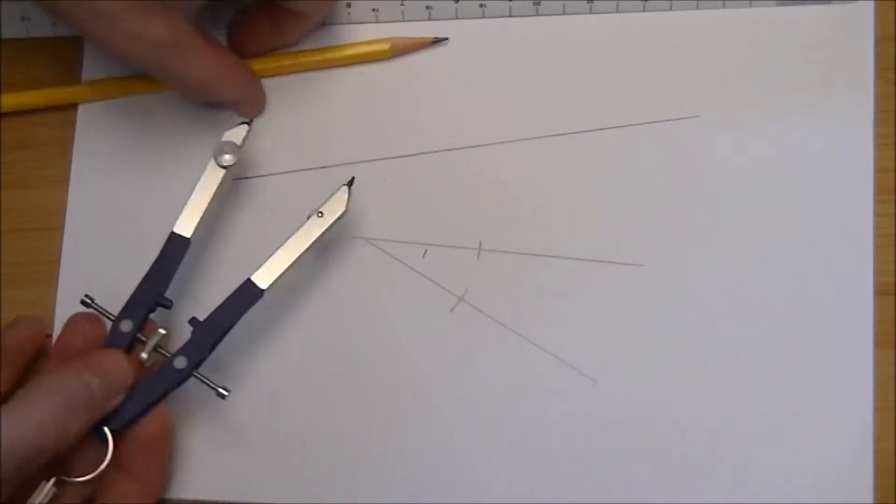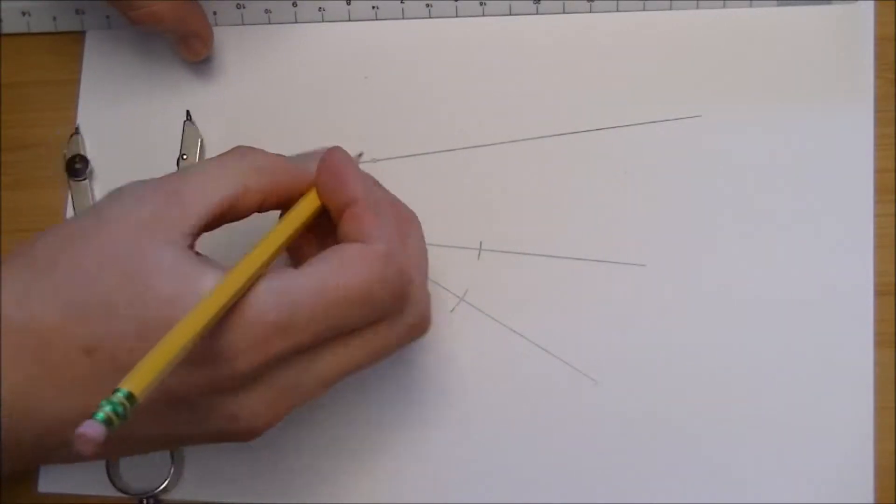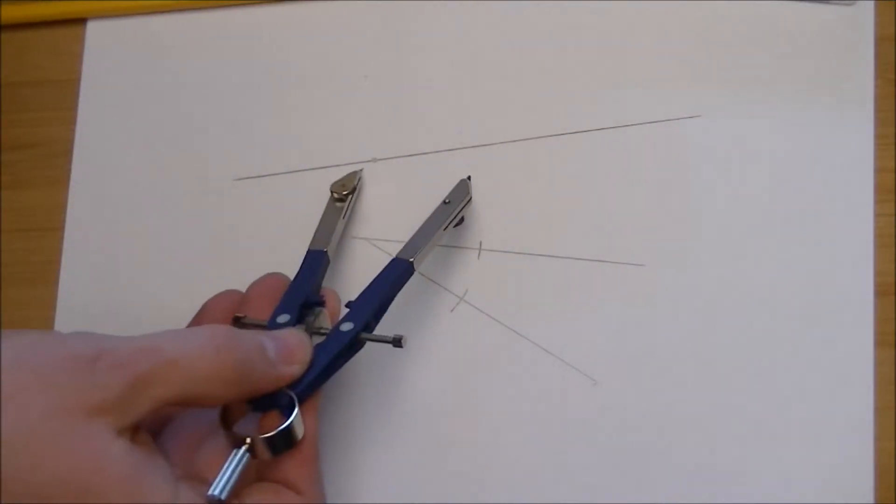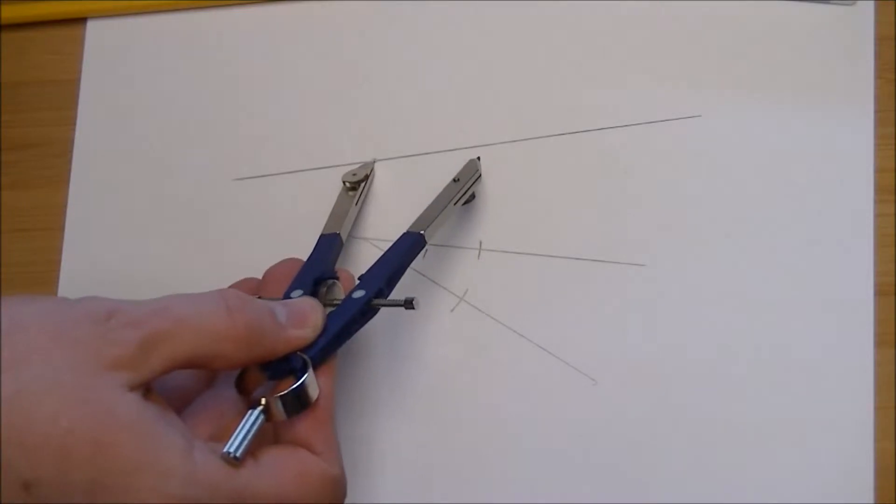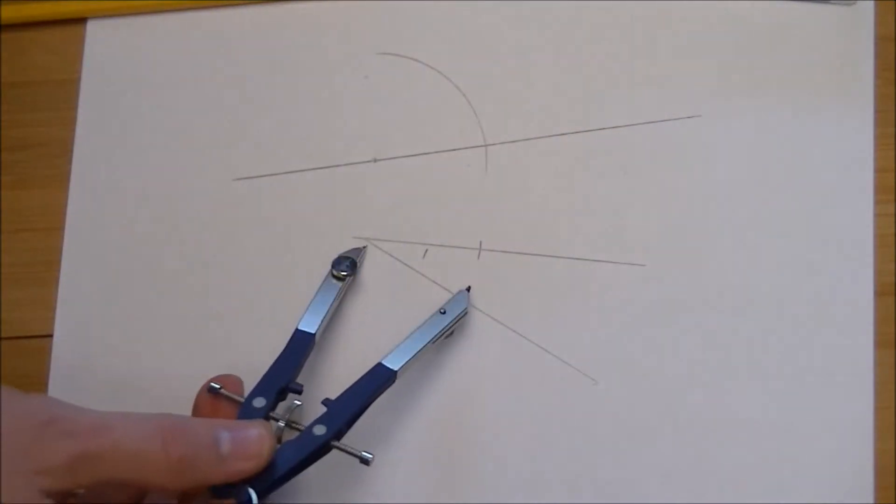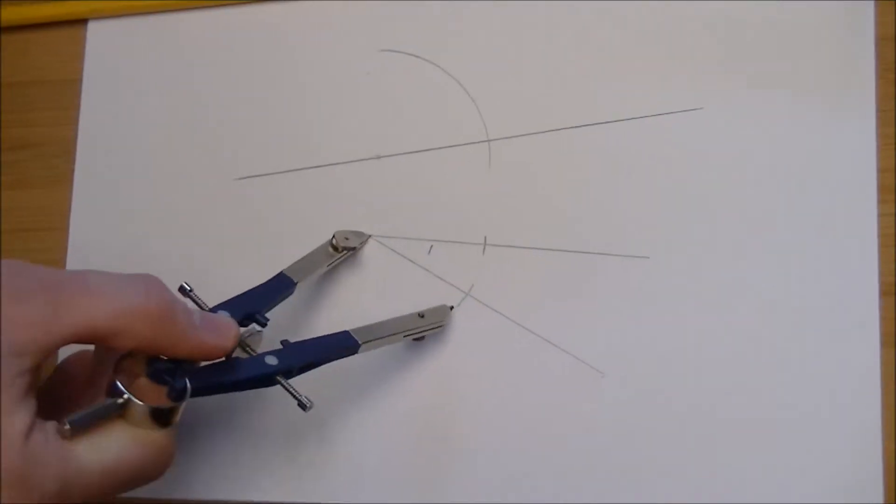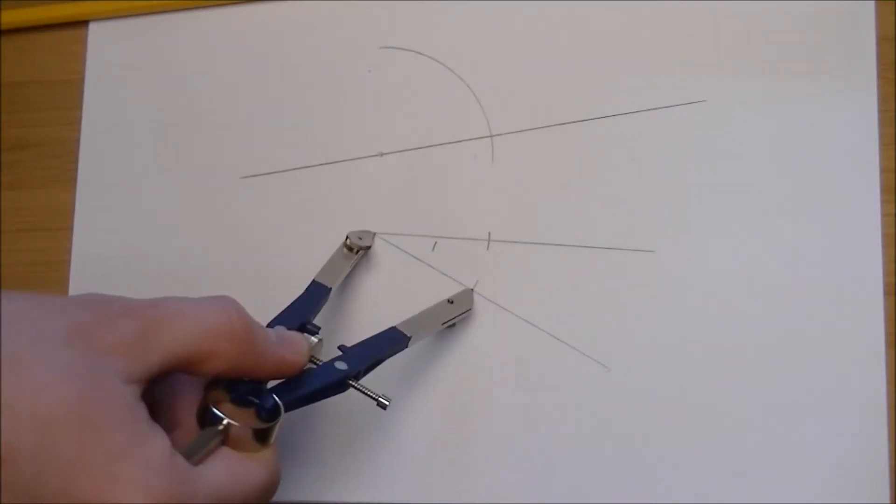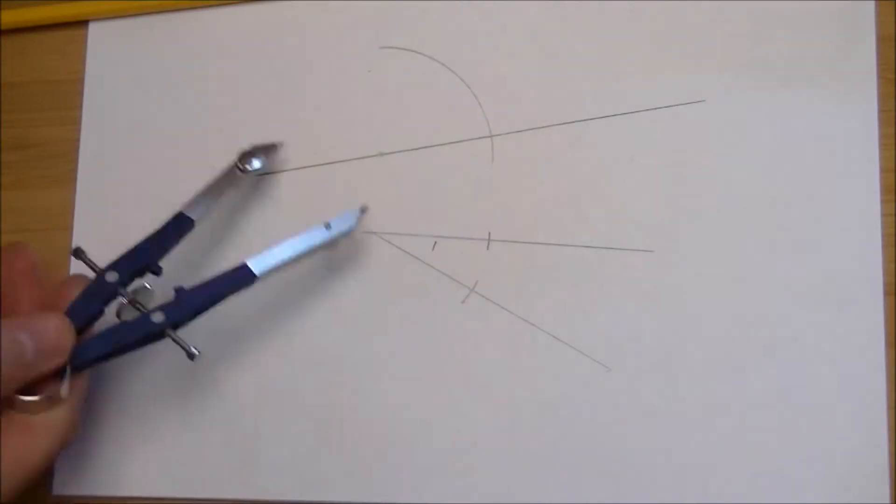Now, I need to select a vertex on this line here. And what I'm going to do is do the same thing. Now, with this one here, I made marks there and there because I know that's where the line is. For this one, I'm just going to draw the full arc.